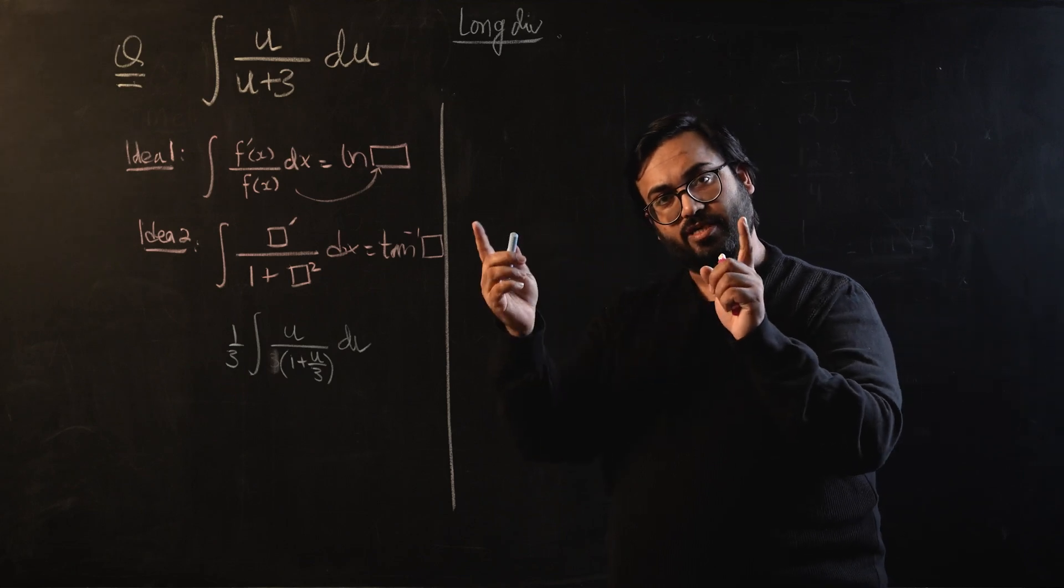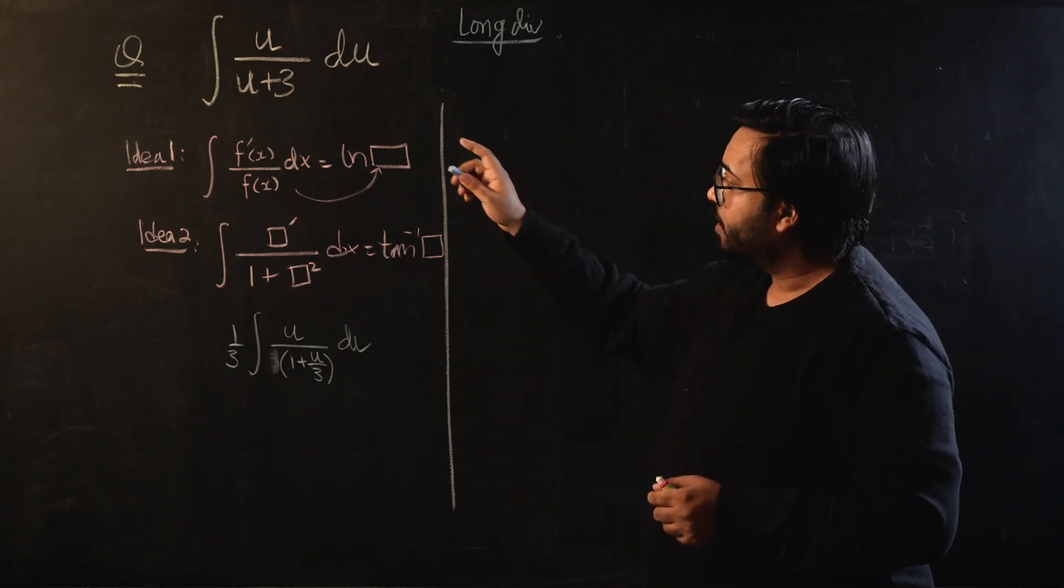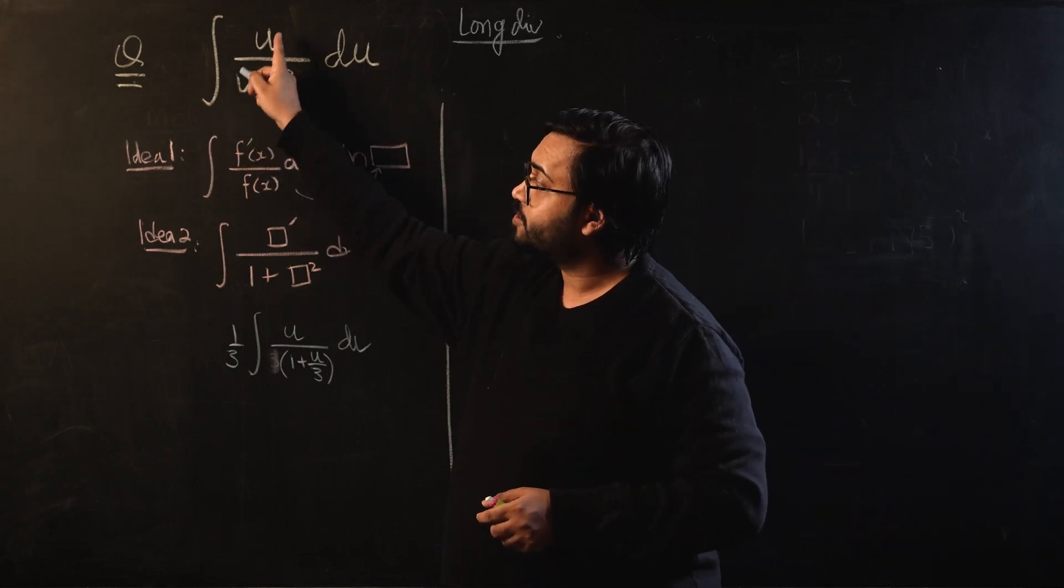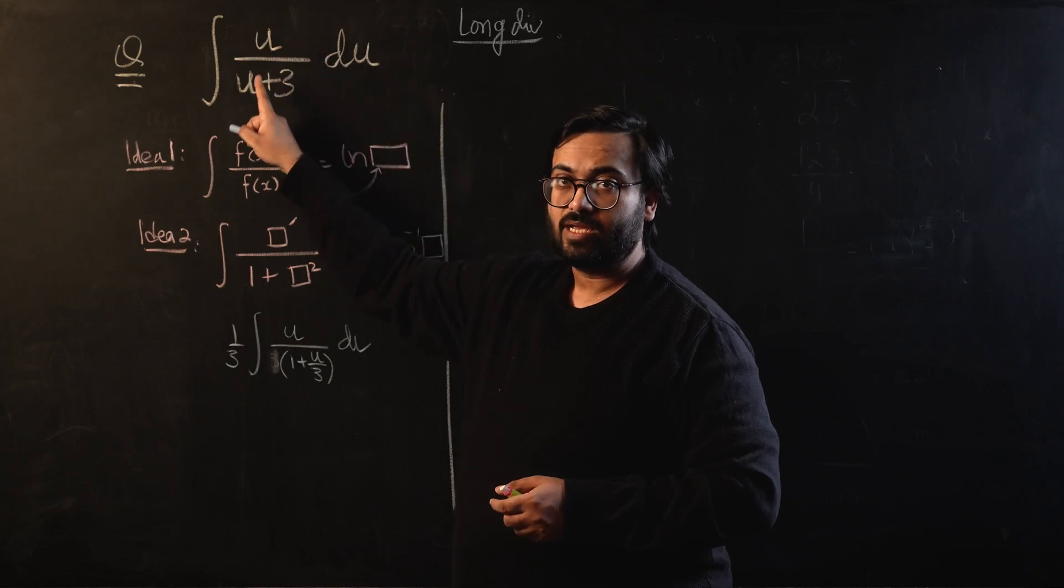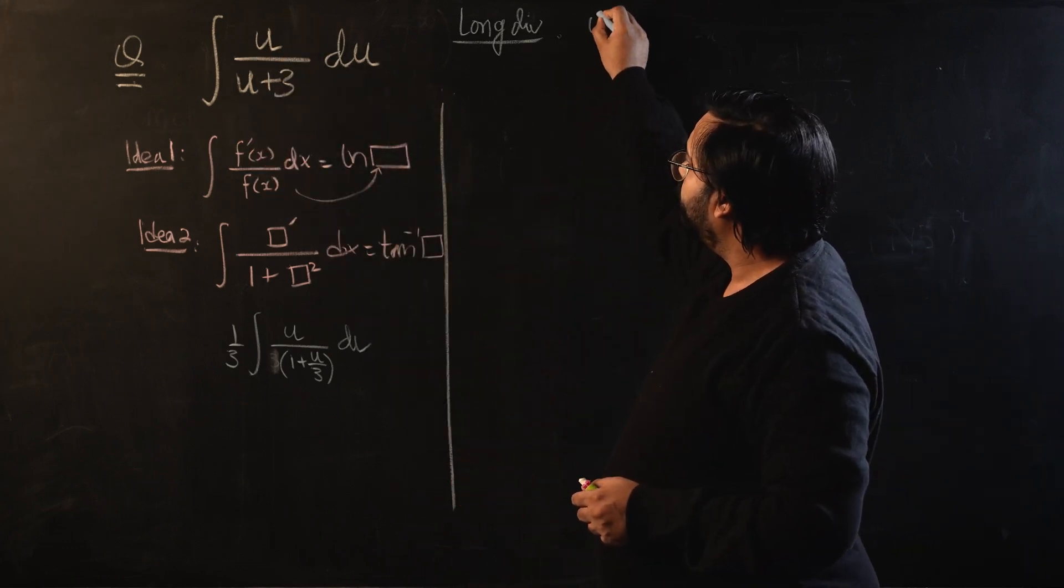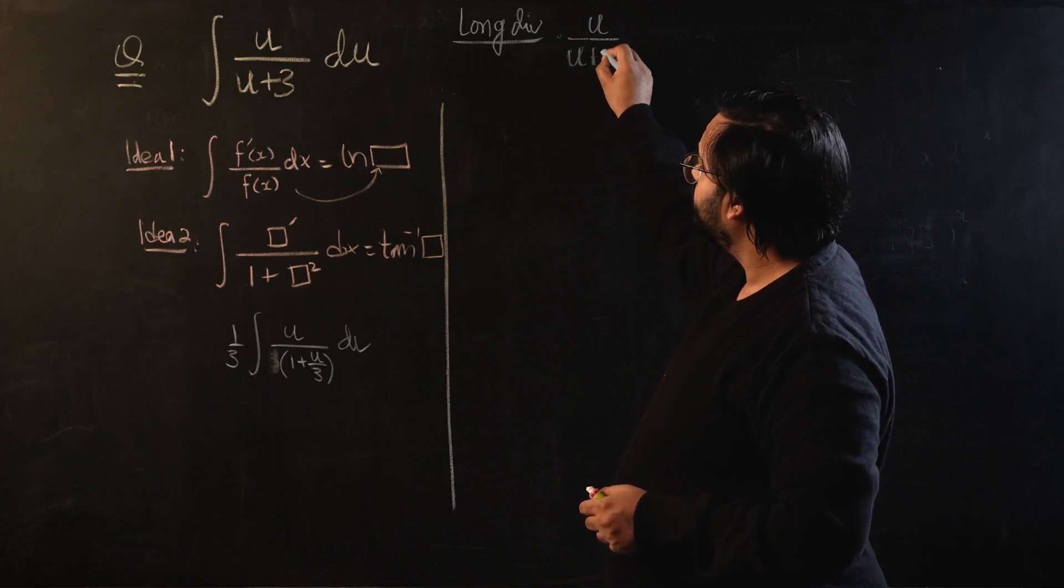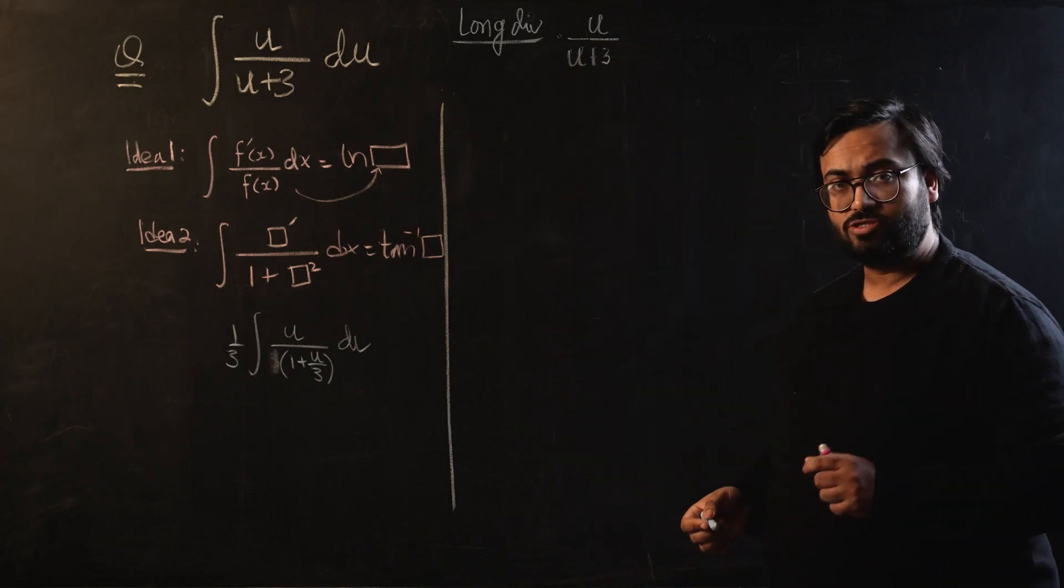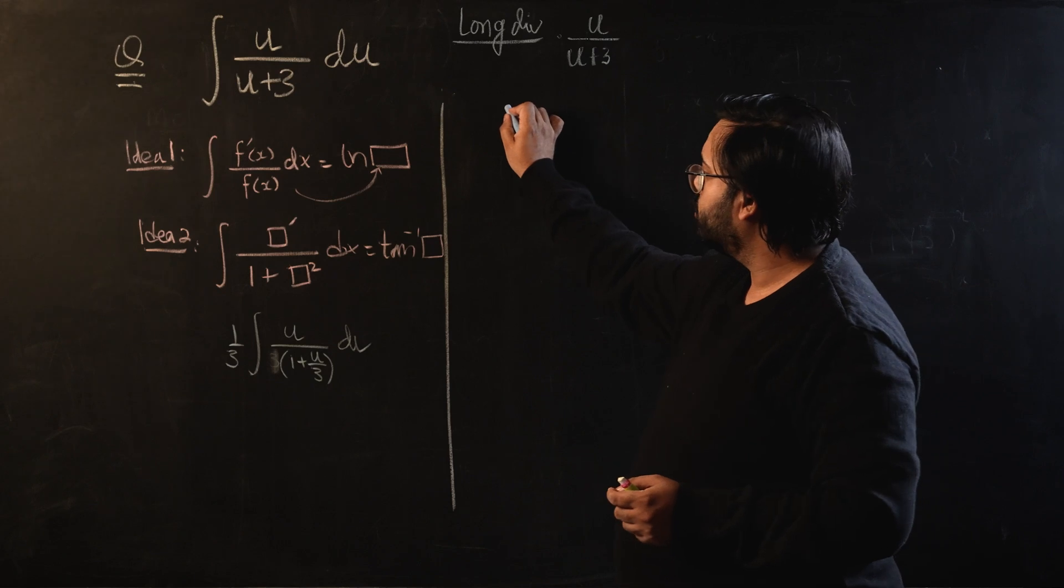As you can see, this is an improper fraction right now. We will do long division and split this fraction into partial fractions. It is an improper fraction because the maximum power of the numerator and the maximum power of the denominator are equal.